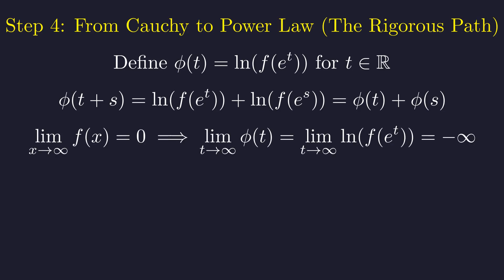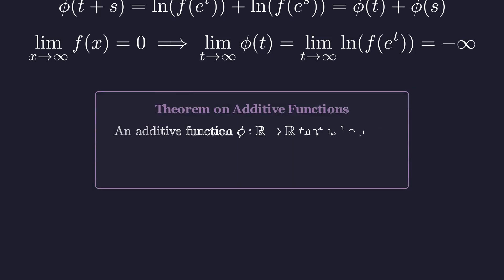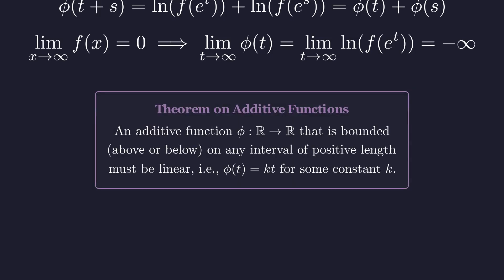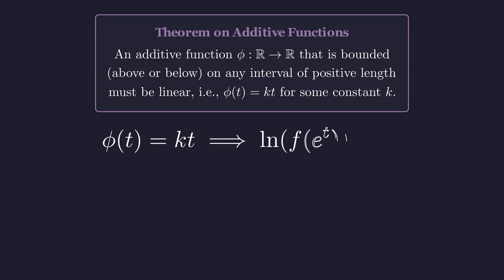Now we use the second condition. As x approaches infinity, f of x approaches 0. For our transformed function as t approaches infinity, e to the t also goes to infinity. So phi of t approaches the log of 0, which is negative infinity. This brings us to a beautiful theorem from analysis. An additive function that's bounded on any interval must be a simple linear function. Since phi of t approaches negative infinity, it must be bounded above on some interval, say by 0. Therefore, our function phi must be linear. So we can conclude that phi of t equals k times t for some constant k.